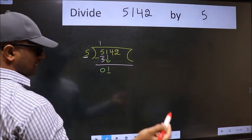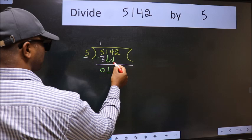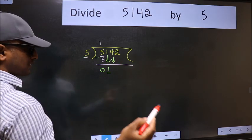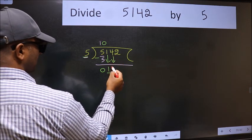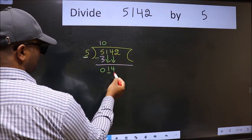So we should bring down the second number. And the rule to bring down the second number is we should put 0 here. Then only we can bring this number down. Now 14.